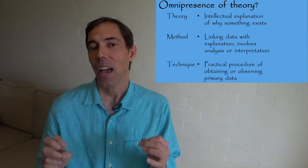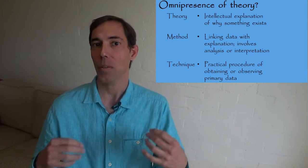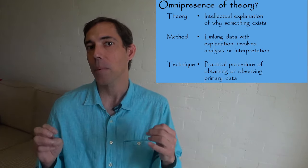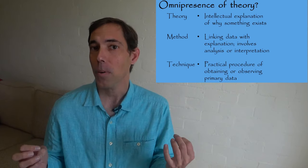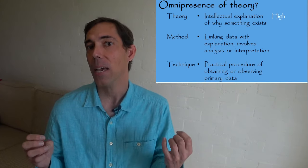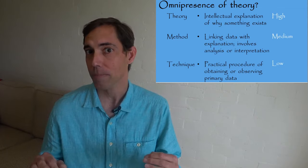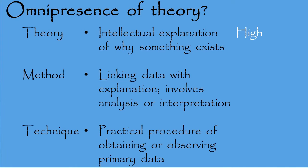Now that you have seen how your techniques and methods can be guided by your theoretical questions, I would like to consider more about the role of theory throughout the research process. In one point of view, theory operates in high, medium, and low orders. A high order of theory refers to the abstract intellectual ideas of hypotheses and explanations. A middle order of theory refers to the influence of theory on a method or on a methodological approach. A low order of theory refers to the basic principles and laws of science that allow us to perform our routine technical tasks.